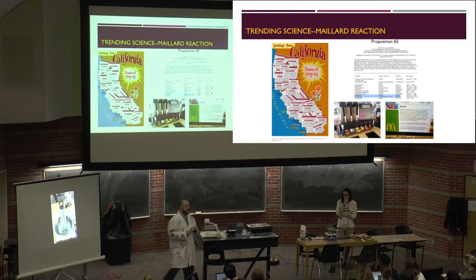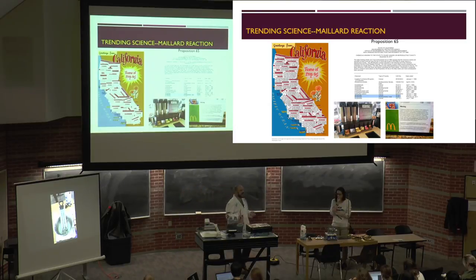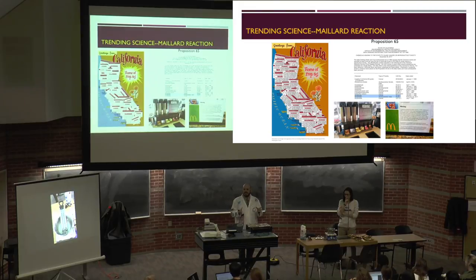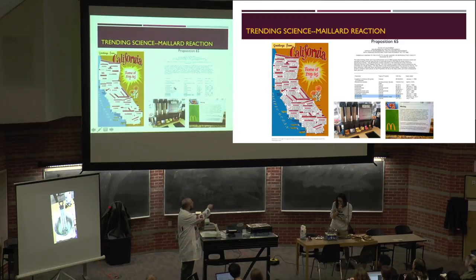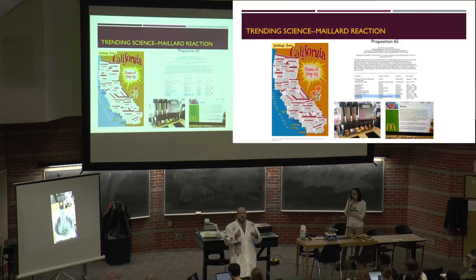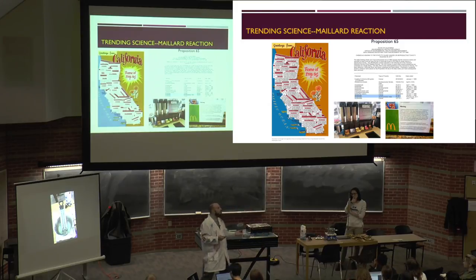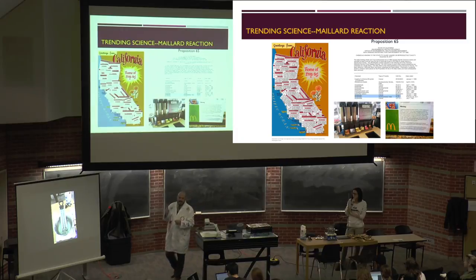In California, has anyone heard of Proposition 65? Anything that undergoes significant Maillard reaction or was identified as a carcinogen must be labeled. So in Starbucks and McDonald's in California, there must be a warning displayed that their product is carcinogenic. Every time you have coffee or grilled meat, acrylamide is present. This is particularly significant when you eat a lot of deep-fried potato-based products, and legislation has begun on how to label acrylamide on products.